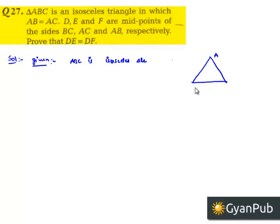Label the vertices A, B, C where AB equals AC. It is given that D is the midpoint of BC, E is the midpoint of AC, and F is the midpoint of AB.